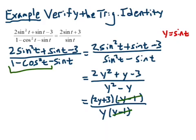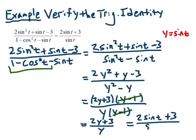And that leaves us with 2y plus 3 all over y. And in the final step, we'll substitute from up here. We had y equals sine of t. So we rewrite 2 times the sine of t plus 3 all over sine of t.